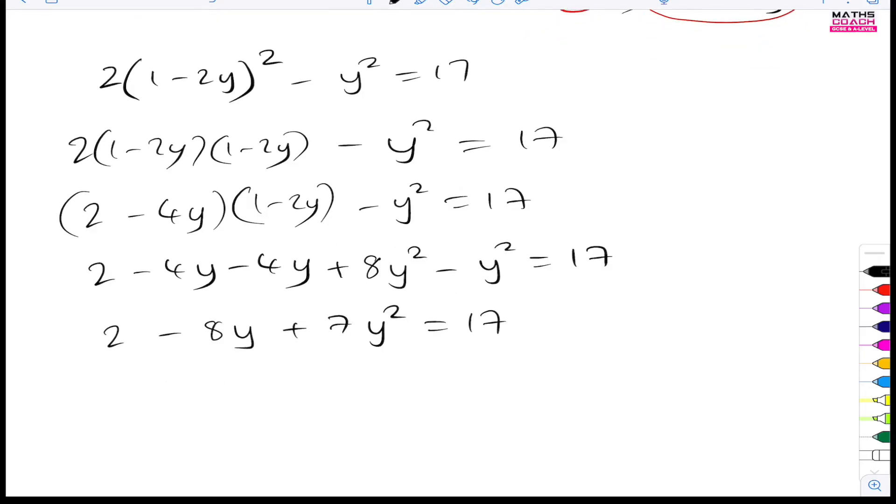Now, I want to make this into a quadratic equation in the form ax squared plus bx plus c equals zero. So just focus on equaling to zero on one side. This means I need to take this over to this side. And 2 minus 17 will do that for me. But I also want to start with a positive x squared, sorry, y squared.